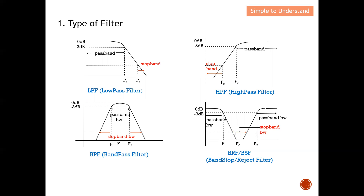Last but not least, the band stop or band reject filter. From this diagram, you can see that this particular band is rejected — it's the stop band. Sometimes we also use this as a notch filter, meaning this particular band is not allowed to pass, while the rest falls under the pass band. Hence this filter response is called a band reject or band stop filter.